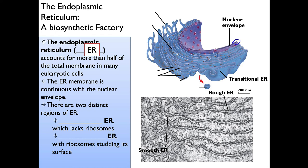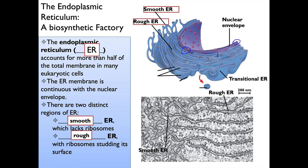There are two distinct regions of the ER. We have the smooth ER — if you look at it, these tubes are pretty clean on the outside. Compare that to the rough ER, which has little brown dots on it — those are the ribosomes that stud its surface. So it's called rough ER because it's coated in ribosomes.